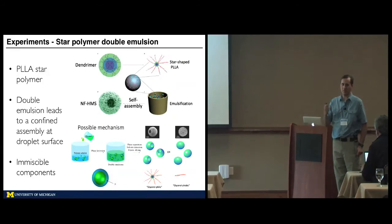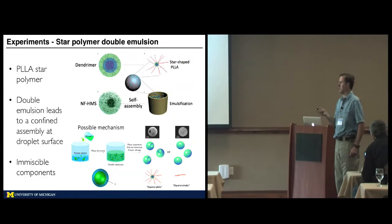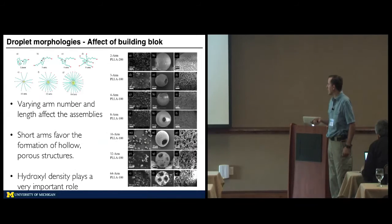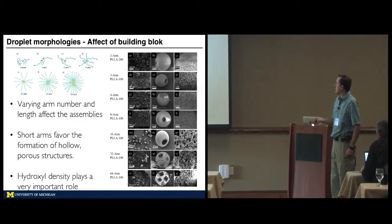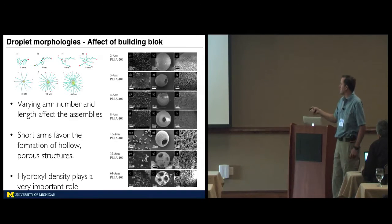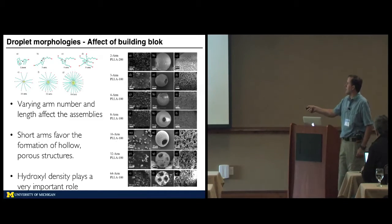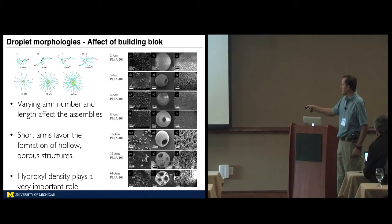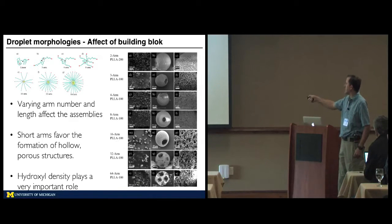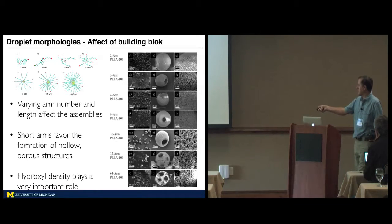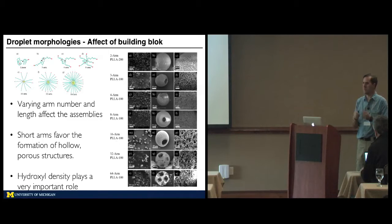It's a standard immiscibility that you get a lot in polymer systems. As shown in the pictures, you can change the number of arms on the star polymer and the length, and as you change these parameters, you can get all these different morphologies. In general, the shorter arms make much smaller and much more porous structures, and the longer arms end up making more solid spherical structures.